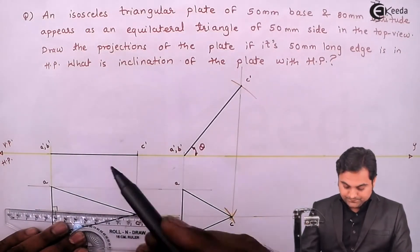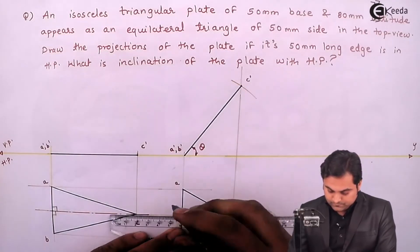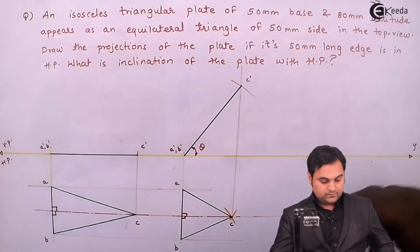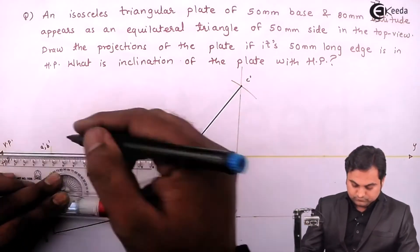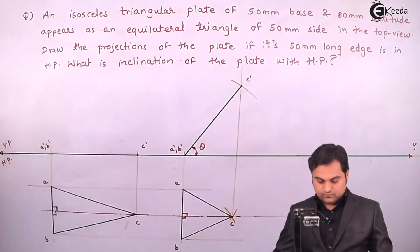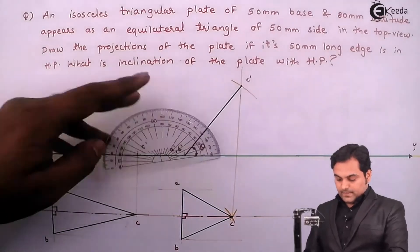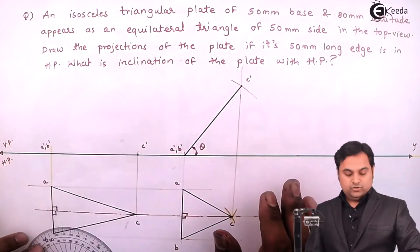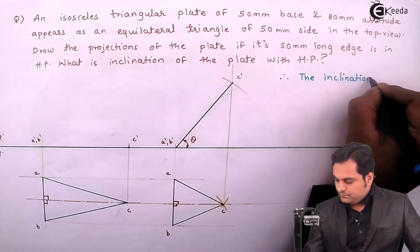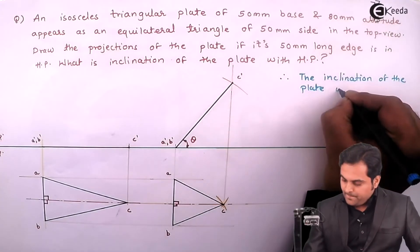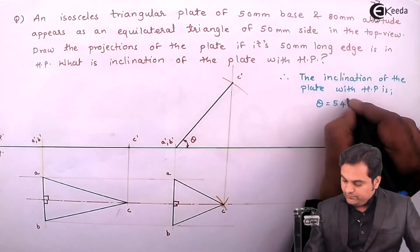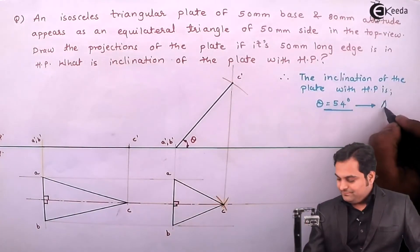Drawing the center line perpendicular to XY, I measure the angle theta. This angle is the inclination of the plate with HP as seen in VP. The angle theta comes out to be 54 degrees. Therefore, the inclination of the plate with HP is theta equal to 54 degrees.